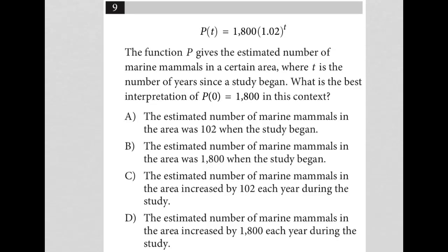So this question starts off by providing us with the function. We have P of t is equal to 1800 times 1.02 to the t power. The question goes on to say the function P gives the estimated number of marine mammals in a certain area, where t is the number of years since a study began.